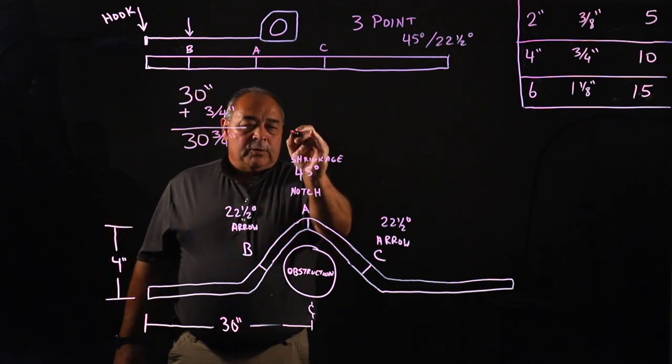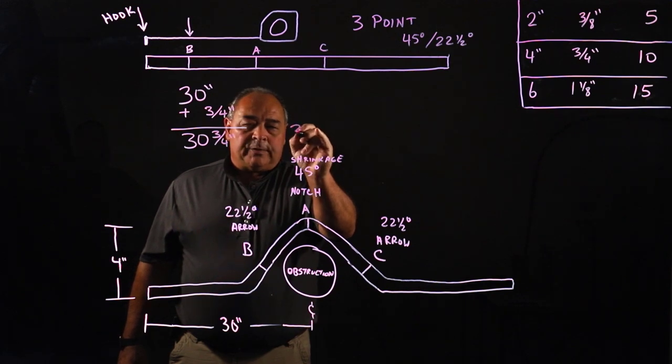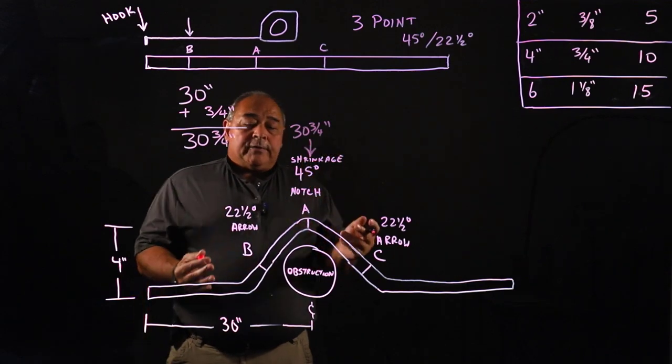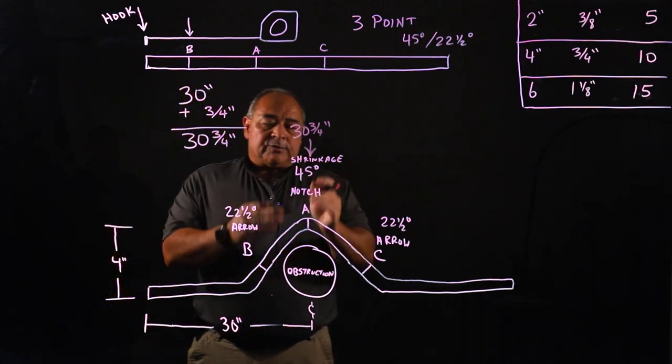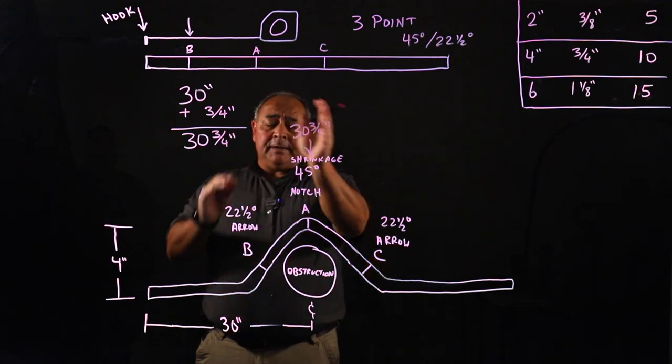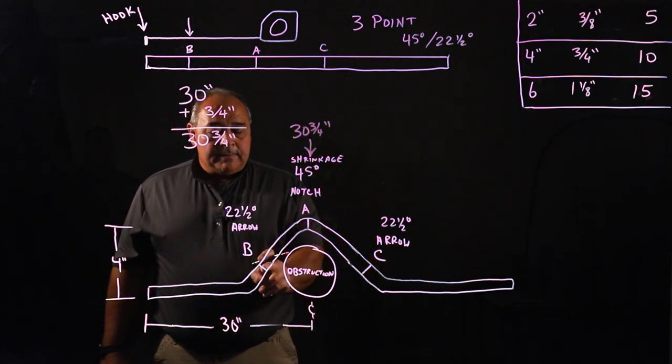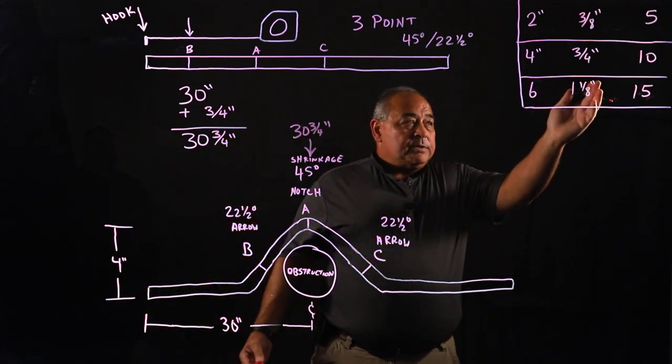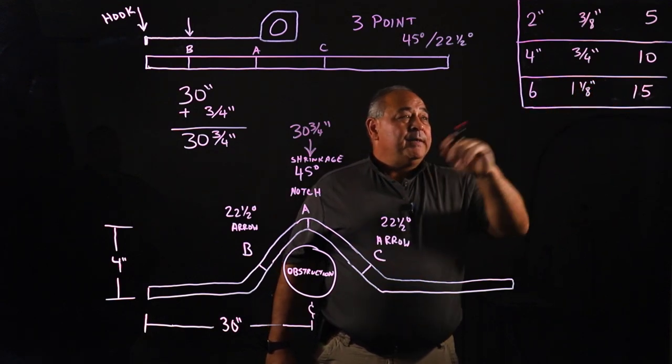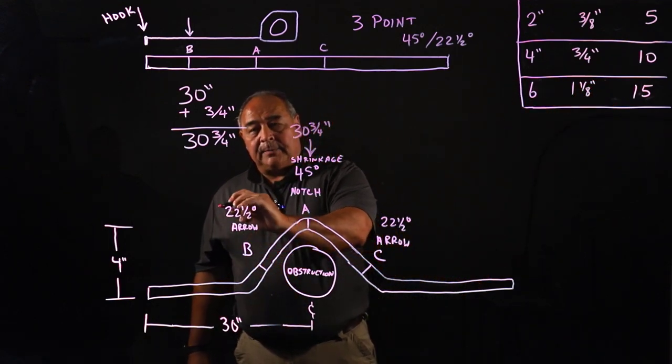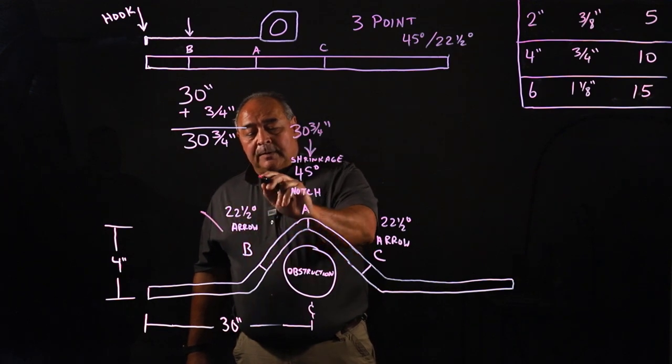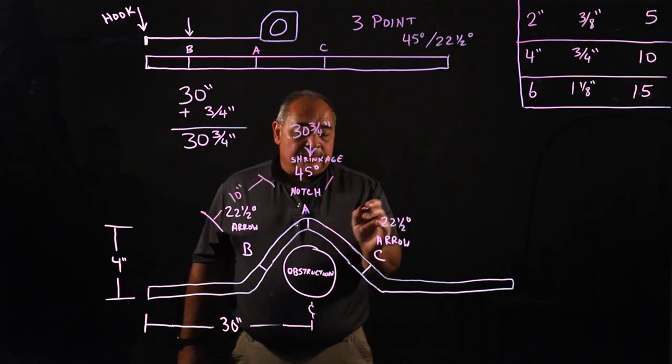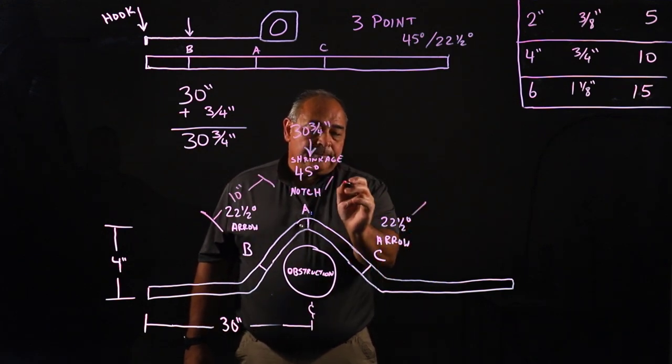So this one, our reference for our A mark is going to be 30 and three-quarters of an inch for A. Everything else, once we establish where A is, A is taking care of the shrinkage, laying this out on a piece of pipe. Then we're going to come back from A for our B measurement. If we're dealing with a four-inch, we've already got a cheat chart, cheat notes. This is going to be 10 inches. From A to B, we'll be 10 inches. And from A to C, same thing, we'll be 10 inches.